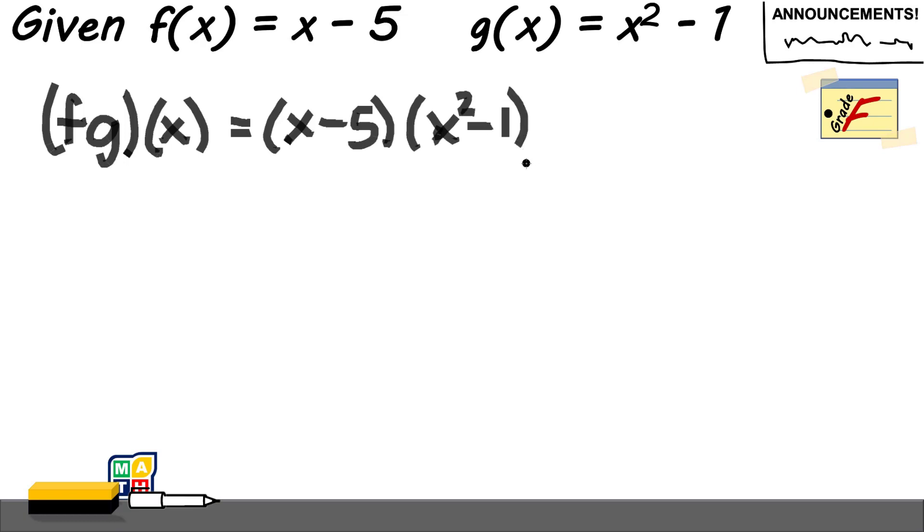we have two binomial expressions. You simply use your FOIL method to get the result. So you have here x times x squared, that is x cubed. Inner terms: negative 5 times x squared is minus 5x squared. And then x times negative 1 is negative x. And then negative 5 times negative 1 is positive 5.